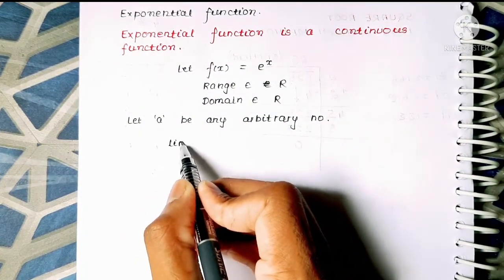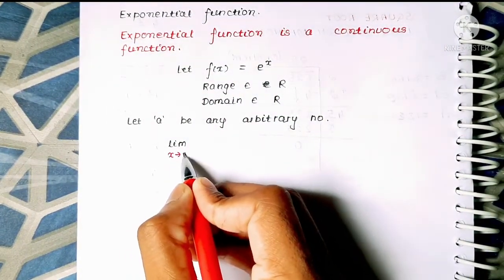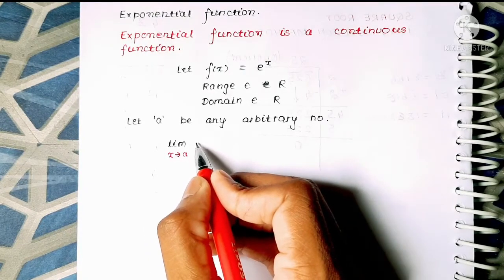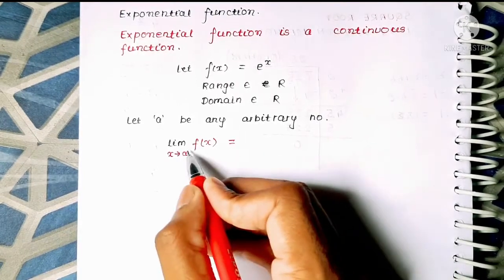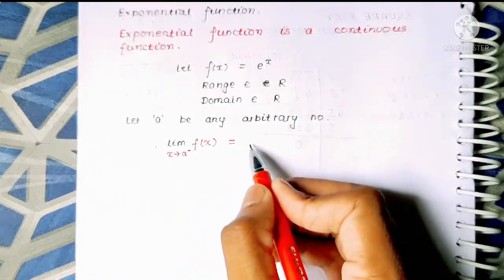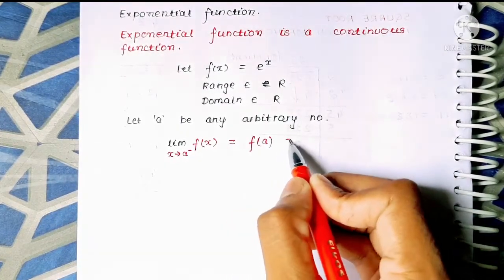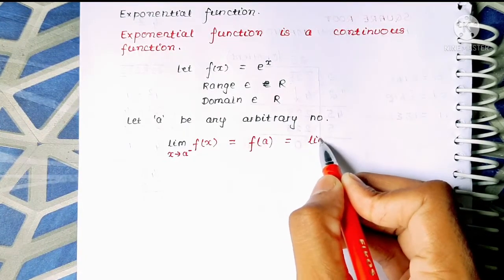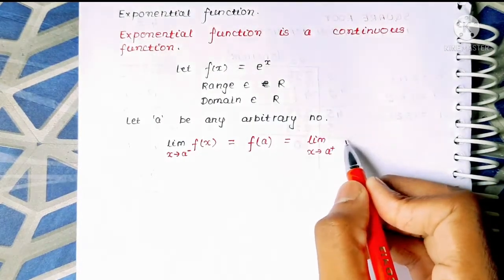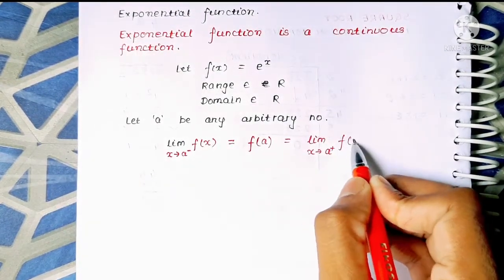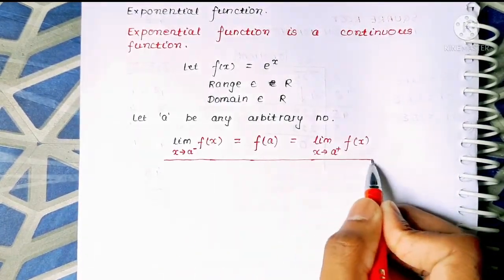We know the continuity criteria: the limit as x tends to a from the left (left hand limit) must be equal to the value of the function f(a), and that must also be equal to the limit as x tends to a from the right (right hand limit). From this criteria we are going to solve the exponential term.